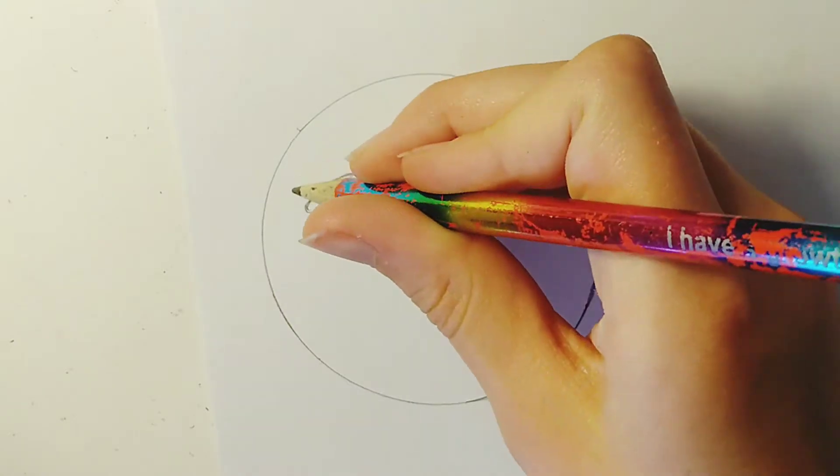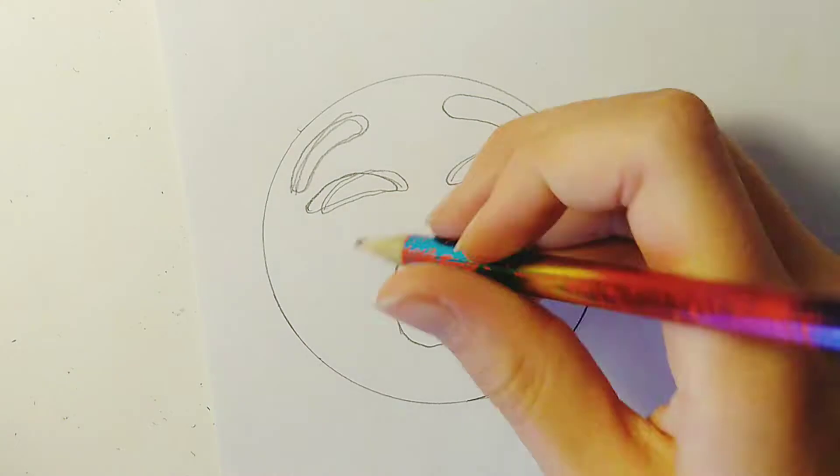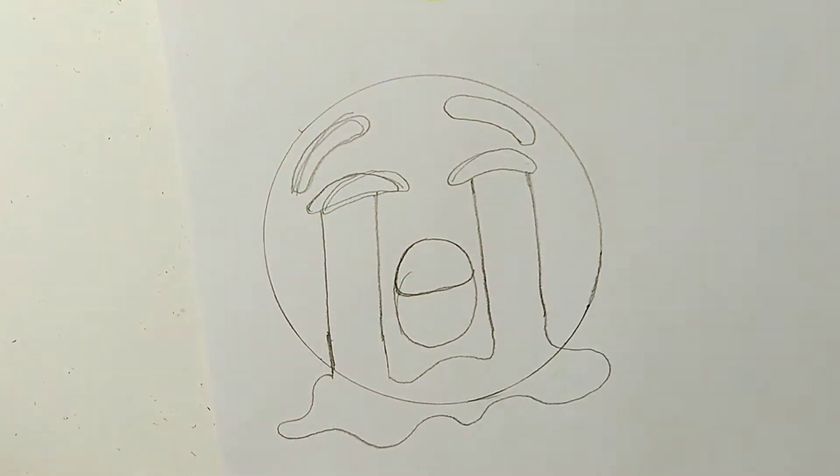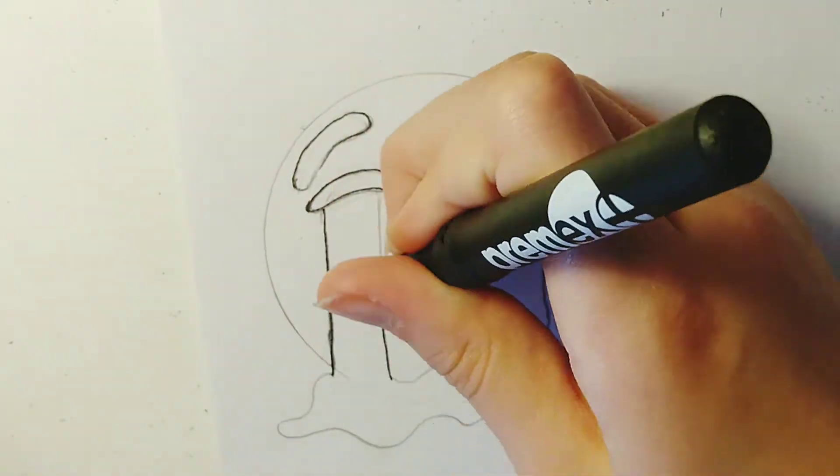And next the crying one. So the eyes for this one are flat on the bottom and then just curved on the top. And the eyebrows going up and the teeth in the mouth cover just less than half of it. And then we've just got a pool of tears at the bottom.